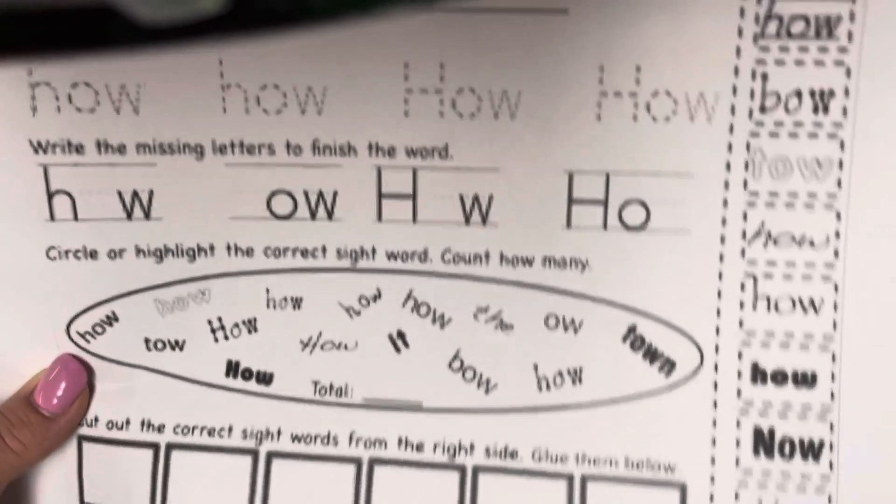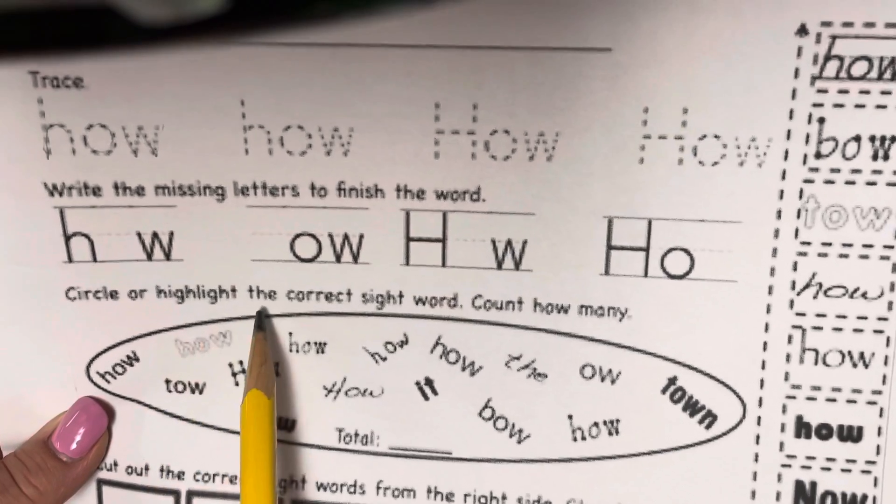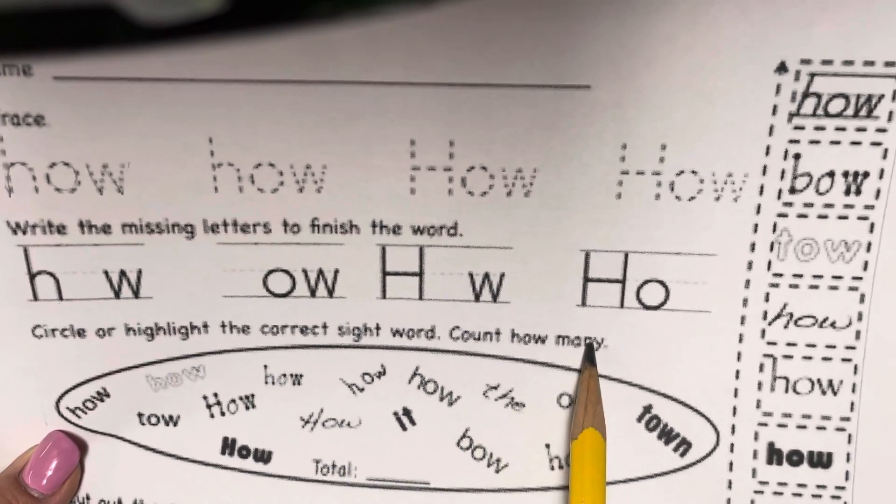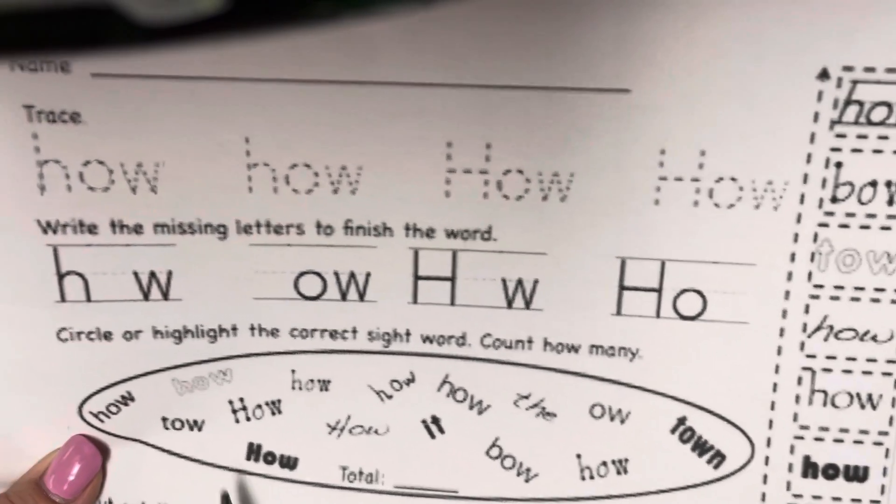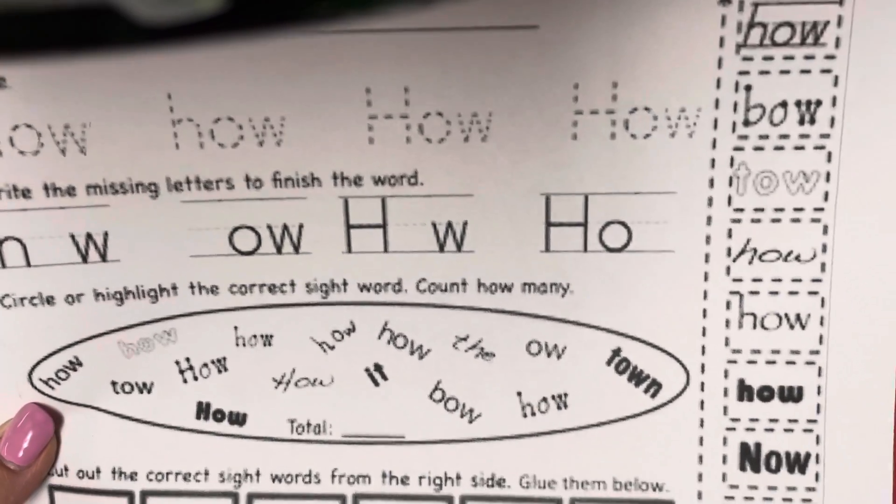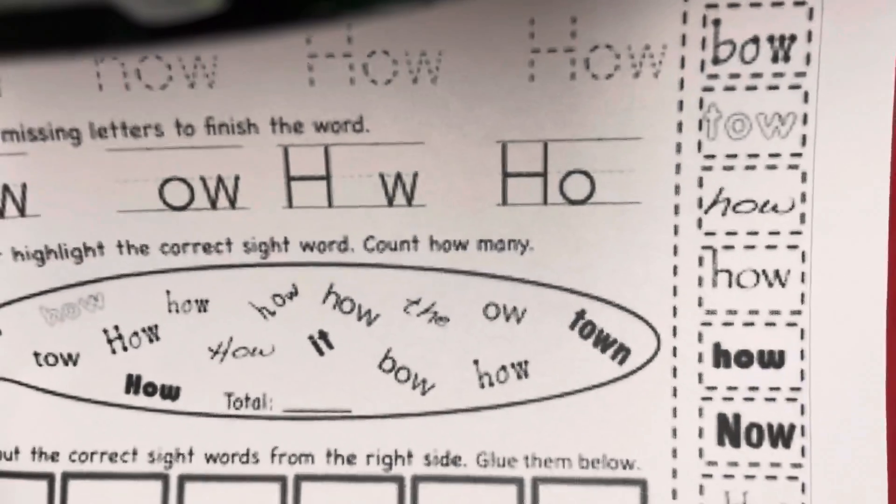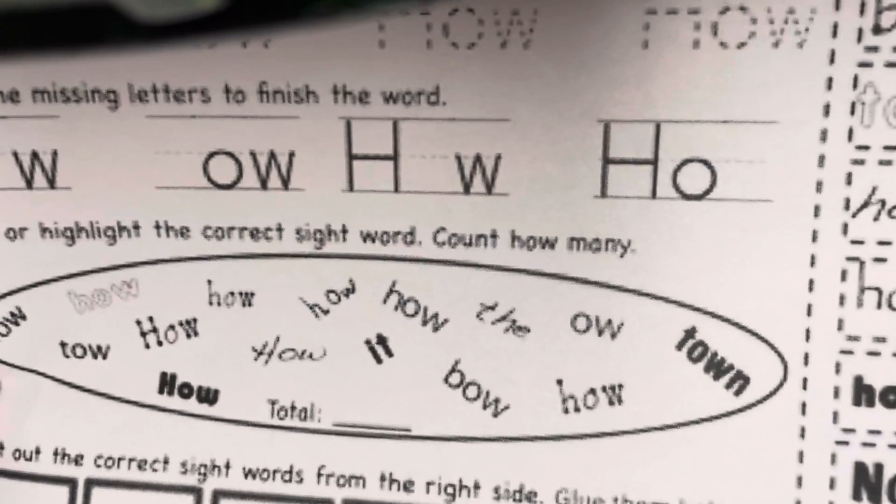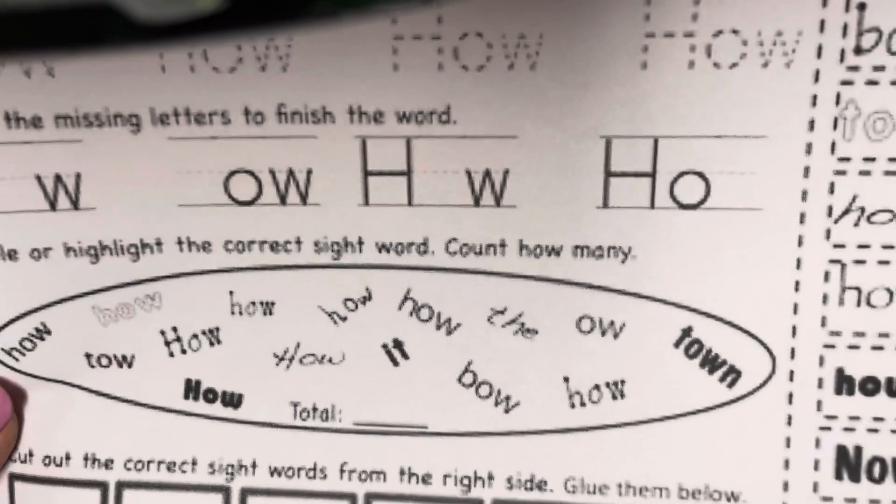And then on this part, circle or highlight the correct sight word. Count how many. So you want to circle all the words that spell how. There's different kinds of fonts, meaning the words are written differently. Fat letters, skinny letters, dark letters, crooked letters.